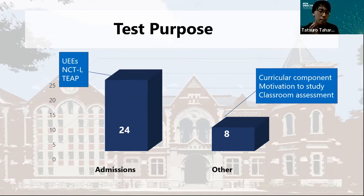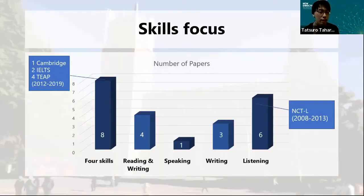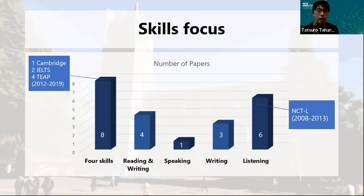Other studies focus on tests used for other purposes, covering aspects of assessment such as curricular components, motivation to study, and classroom assessment. Regarding skills focus, there has been increased interest in washback from four-skills tests, reflecting the heated discussions on introducing commercial four-skills tests in university admission tests in Japan. The NCTL attracted the second most attention by researchers.